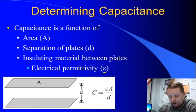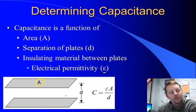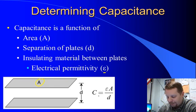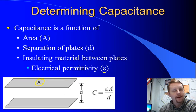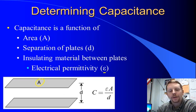So, with two parallel plates of area A separated by some distance d, and the material between them has a permittivity epsilon, capacitance is equal to epsilon A divided by d. The bigger the area, the more the capacitance, the closer the plates, the more the capacitance, and the higher the permittivity, the more the capacitance.